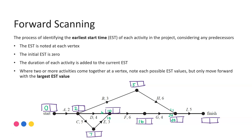We have to wait for both of them to be finished. The overall completion time: 20 plus five for activity I gives me 25. At this point my forward scan is all that is required to identify that overall completion time - the project will finish in 25 hours. The key thing is where two or more activities come into one vertex: we consider both options but only move forward with the largest of those earliest start time values.